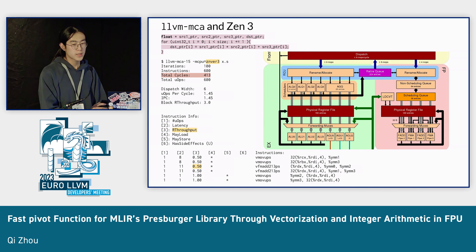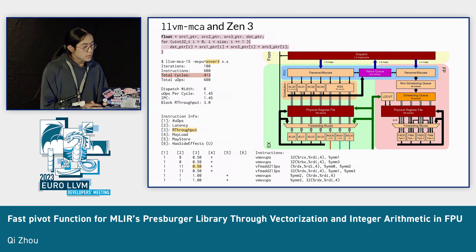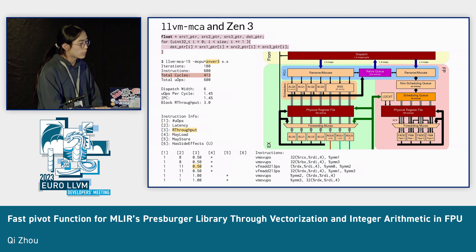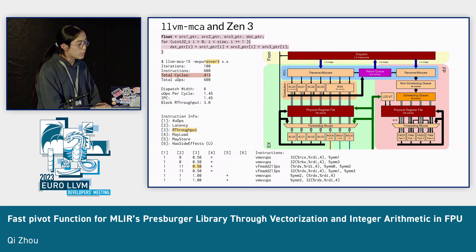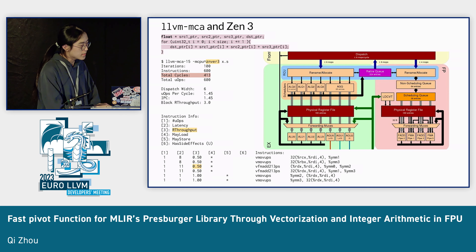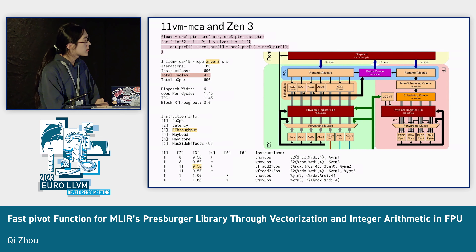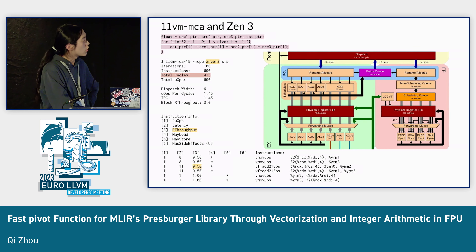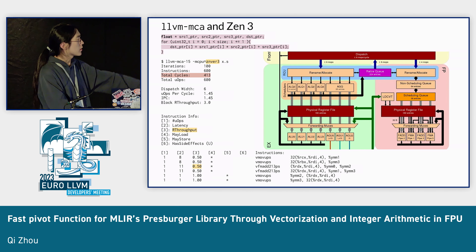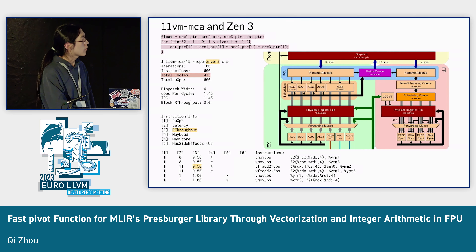This is confirmed by LLVM MCA on Zen3. The C++ source code does an element-wise operation that multiplies and adds values from two arrays and saves to a destination array. After compiling and disassembling using Clang, targeting Zen3 with vectorization enabled, and feeding the hot loop's six lines of instructions to LLVM MCA, it is discovered that the reciprocal throughput of the FMA (fused multiply-add) instruction is 0.5, meaning a throughput of 2. This matches the microarchitecture diagram showing two FMA execution units.